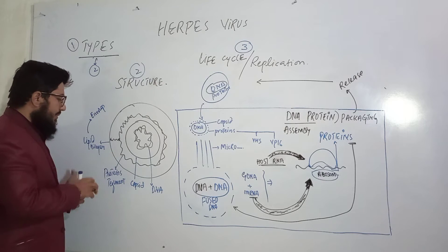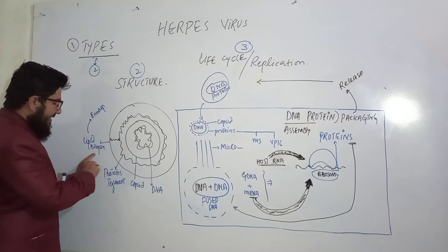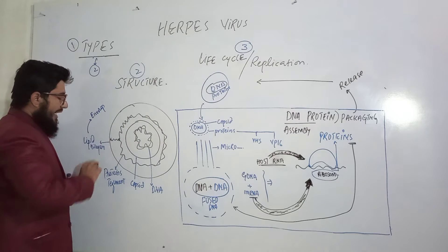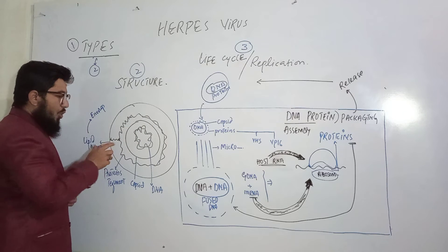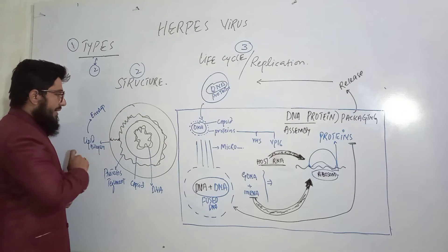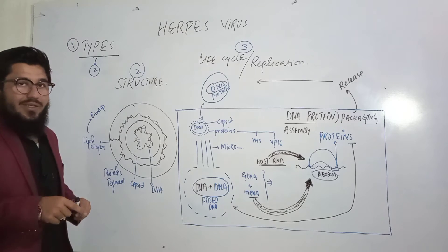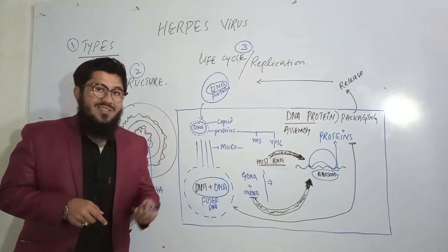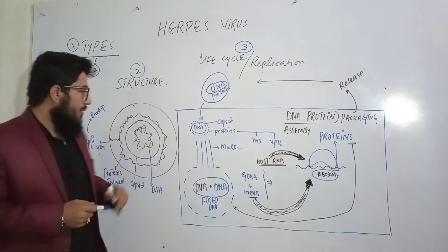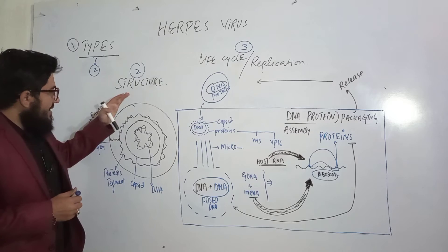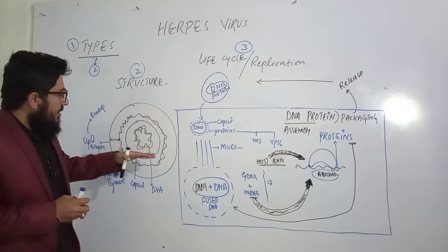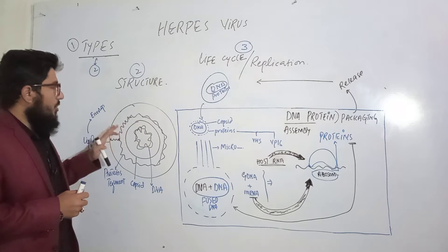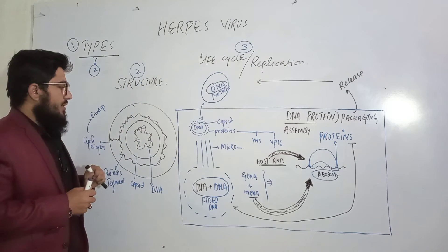The tegument proteins are actually responsible to hold the lipid bilayer — the last layer. This lipid bilayer is what is actually known as the envelope. With this, our discussion regarding the structure of the herpes virus is complete. You can also use this structure for the introduction of the herpes virus.